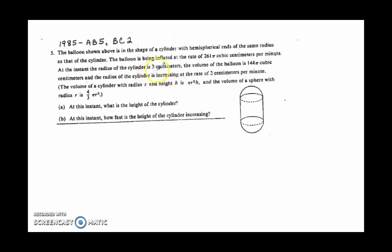So the instant that they give us is when the radius is 3 centimeters, the volume of the whole balloon is 144 pi cubic centimeters, and dr dt is 2 centimeters.